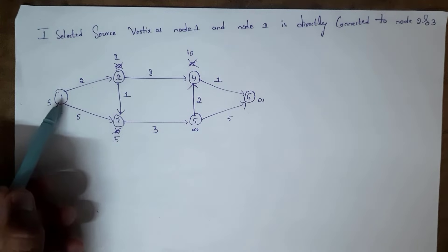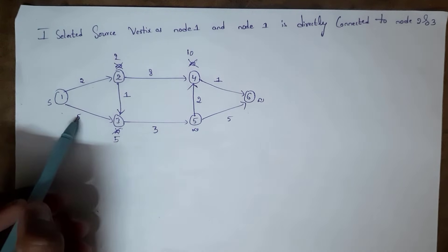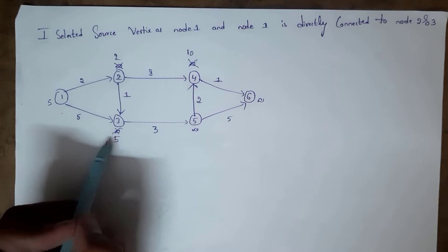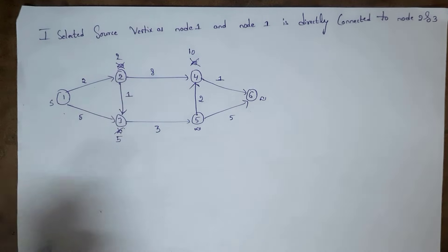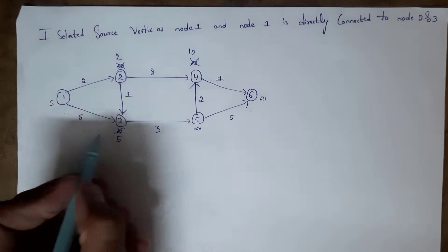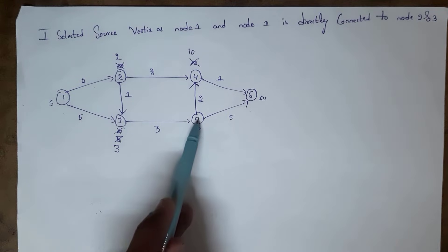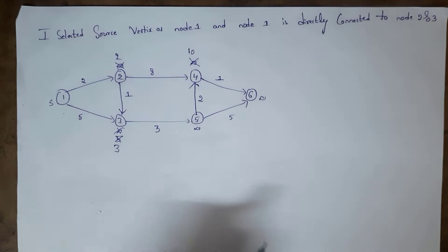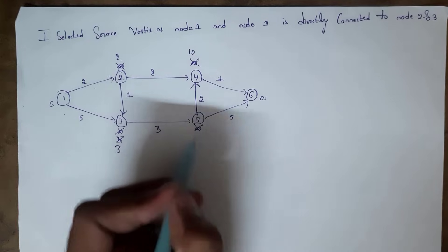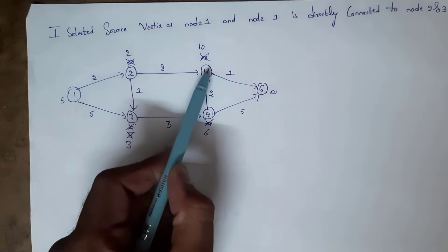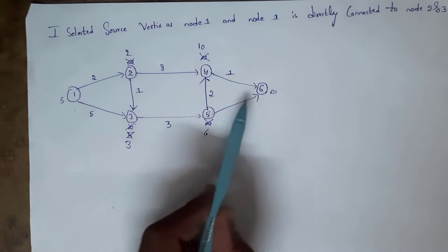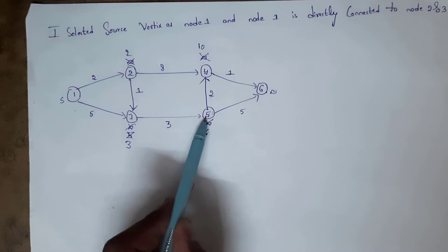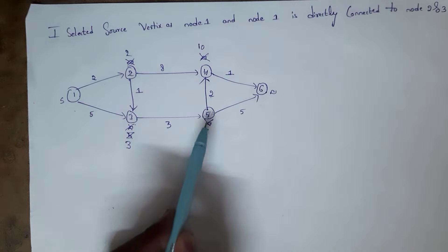I have already visited node 3. Now I am replacing node 3's distance from 5 to 3. Node 3 is connected to node 5, so the distance from node 3 to node 5 is 3 plus 3, that is 6. I am replacing this infinity with 6. Node 5 is connected to node 4 and node 6. Distance from node 5 to node 4 is 6 plus 2, that is 8.